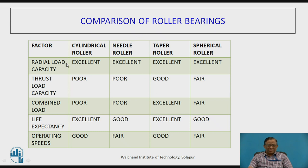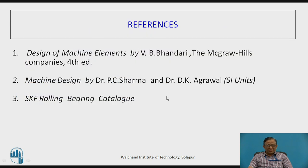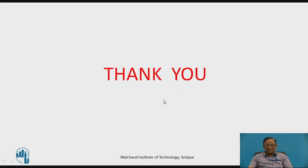Similarly, for roller bearings, the radial load capacity is excellent across all types. Thrust load and combined load capacity are poor for most roller bearings, but taper roller bearings are excellent for combined loads and are used in many machine tool spindles. Life expectancy is excellent for most roller types. Operating speeds are better for cylindrical and similar types but poor for needle roller bearings. This is how one can compare all bearings to select the proper one for a given application. Thank you.